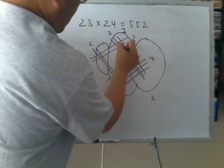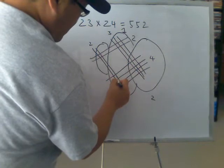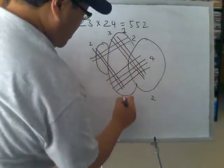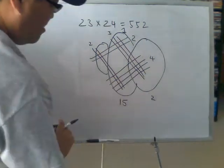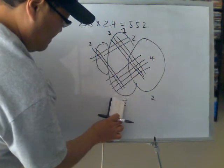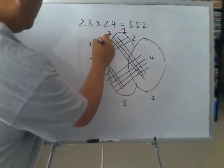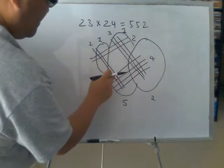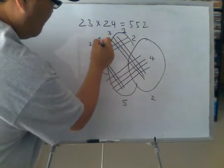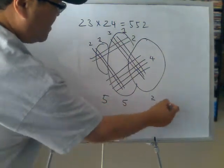1, 2, 3, 4, 5, 6, 7, 8, 9, 10, 11, 12, 13, 14. And then we carry out this 1 to the left side. And we count 1, 2, 3, 4, 5. So we got the answer 552.